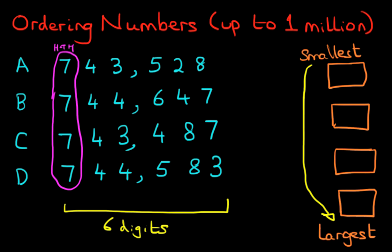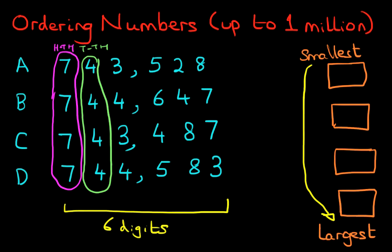Let's move across to the ten thousands. We've circled that. And what do we notice? All of them are four. If all of them are four, that means the ten thousands does not help to tell us which number is larger and which one is smaller.